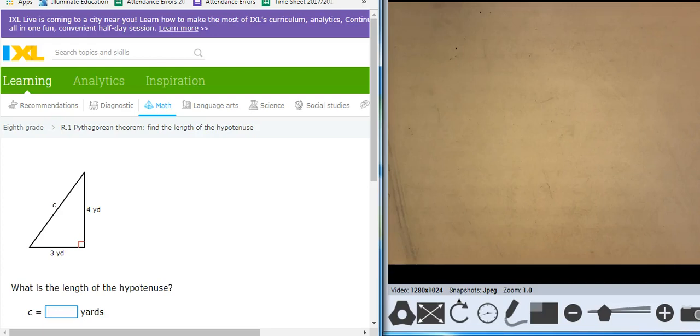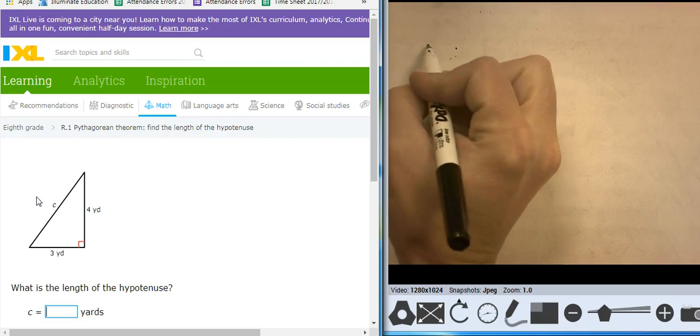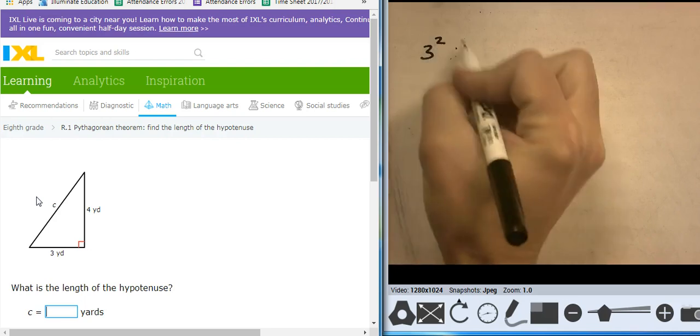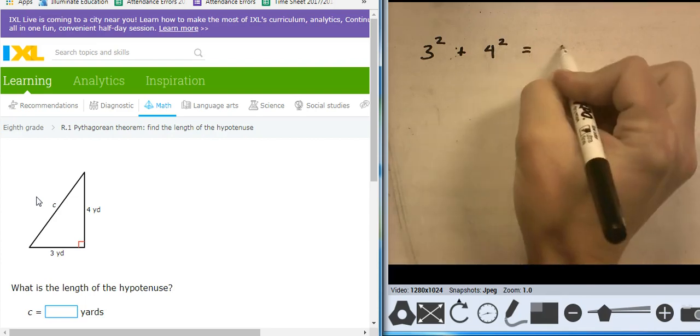Hi, this is Mr. Barr, and I'm going to do an IXL that deals with the Pythagorean Theorem finding the length of a hypotenuse. So here I have a triangle, and the two legs are given. So what I'm going to do, this is using Pythagorean Theorem, it's 3 squared plus 4 squared is going to be the hypotenuse squared.